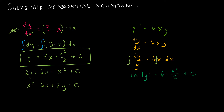To isolate y, I exponentiate each side: e to the natural log of the absolute value of y gives the absolute value of y. On the right side, e to the 3x squared plus c can be written as e to the 3x squared times e to the c. That's just applying the rule that adding exponents corresponds to multiplying same-base powers.